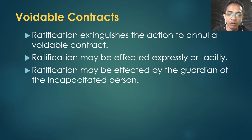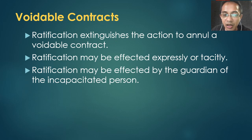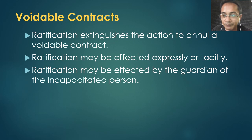Note the distinction: in rescissible contracts, it is the guardian who has fault — the guardian disposed of the ward's property with a lesion of more than one-fourth. Later on, the ward ratifies when he becomes an adult. In voidable contracts, the guardian can ratify if he finds the contract to be favorable to the incapacitated person.